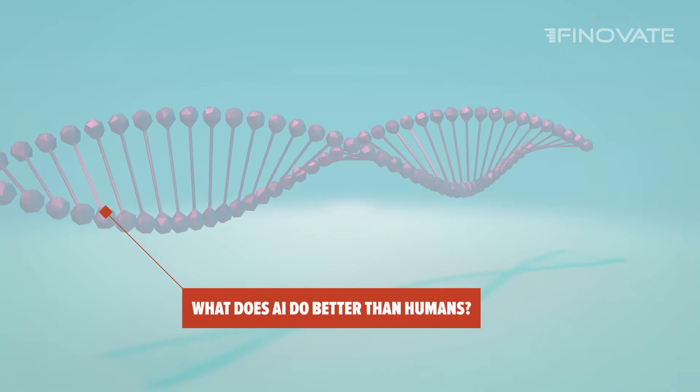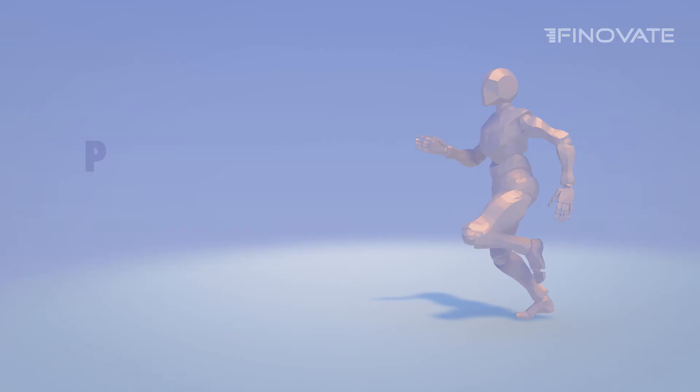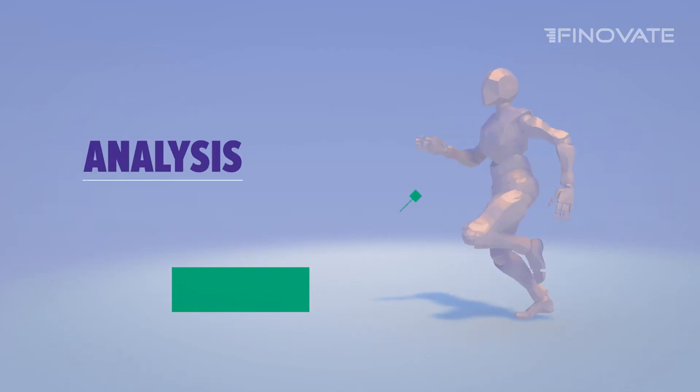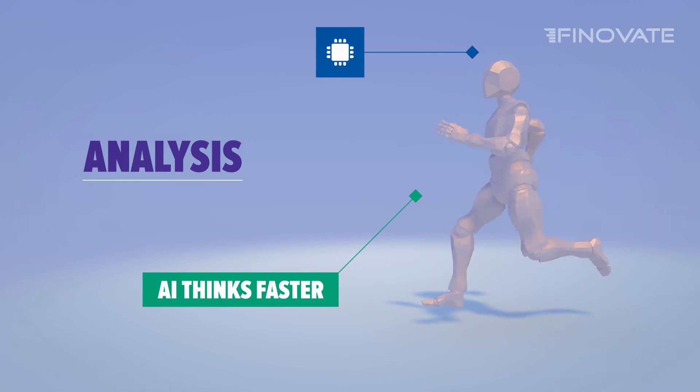What does AI do better than humans? First, analysis. AI thinks faster, processing far more information at a much more rapid rate than a human mind.